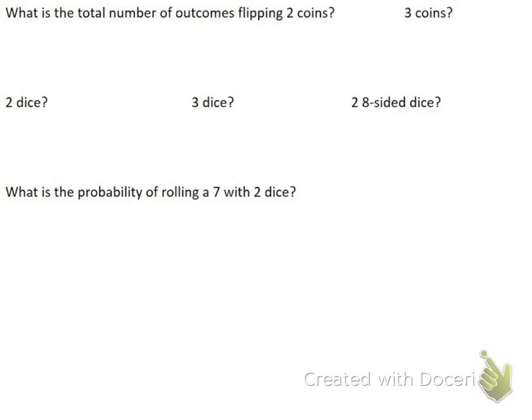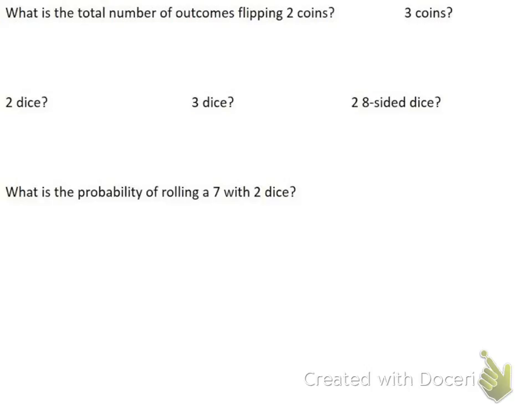Now we're getting to something a little bit different. For these problems, all I want to do is figure out the total number of outcomes when flipping or rolling multiple things. For the first one, what's the total number of outcomes flipping two coins? I can list them out: two heads, a head and a tail, a tail and a head, and two tails — four different total possibilities. The order matters, so flipping a head first and then a tail is different from flipping a tail first and then a head.